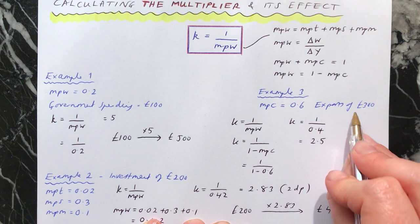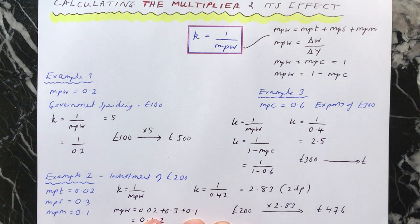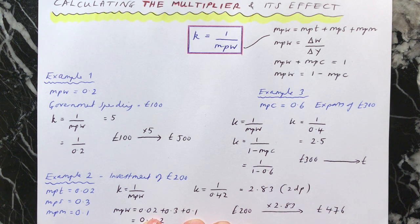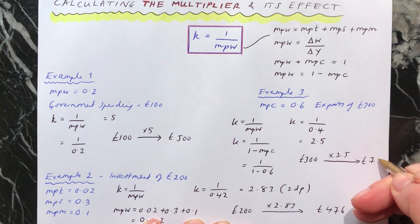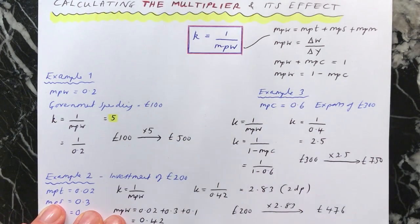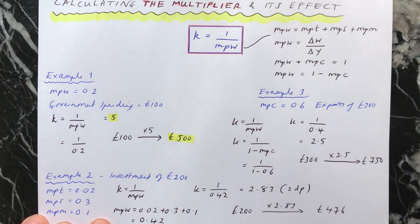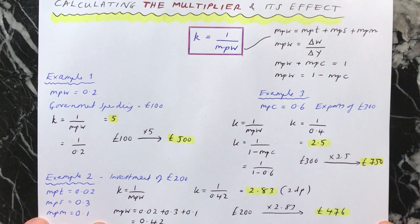So the multiplier here is 2.5. We've had an injection of £300 from exports. The final impact on national income is £300 multiplied by 2.5, which is £750. In each case, we can see what the multiplier is and what the final impact on national income is. I suggest you now go through again, check your answers, and make sure you know how to work these out.